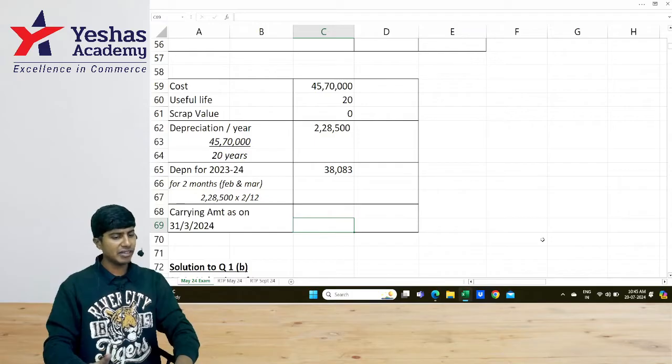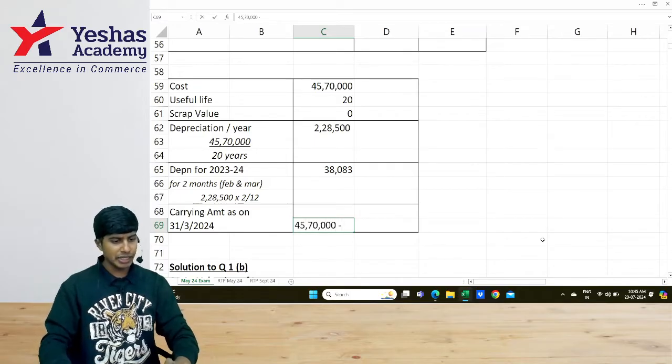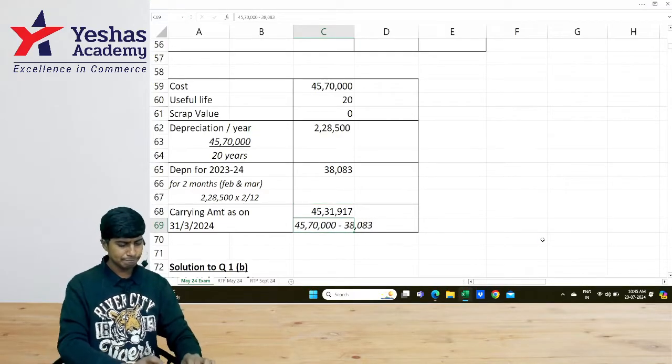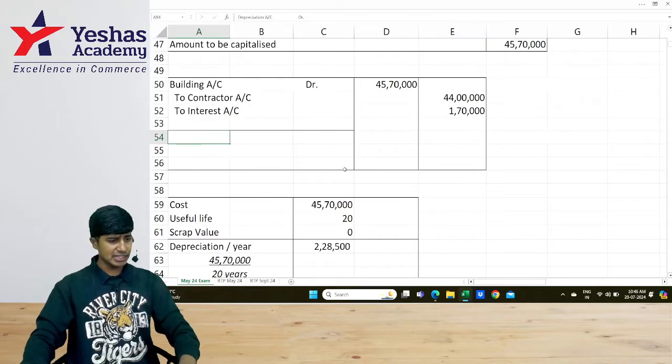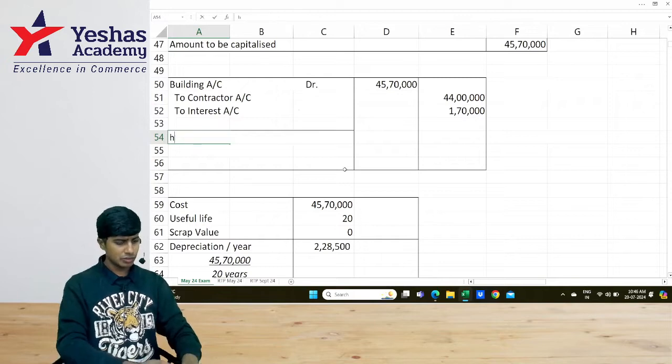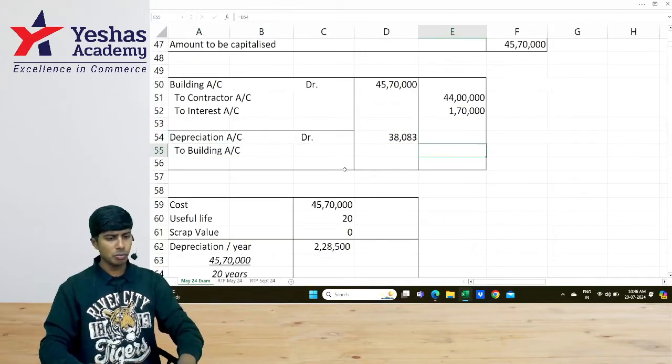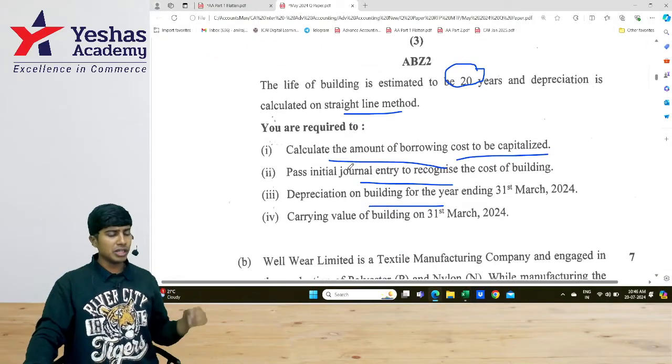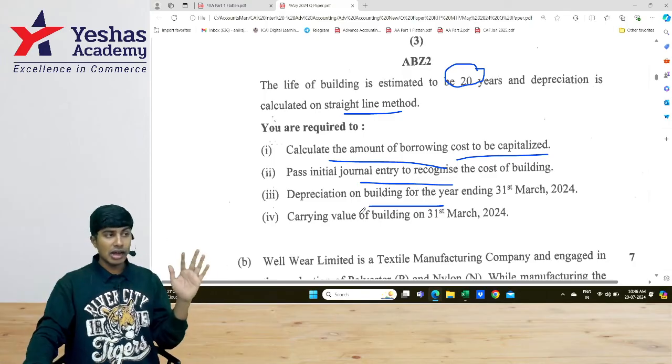And carrying amount of the asset will be ₹45,70,000 minus ₹38,083, ₹45,31,900. This is what is being asked. We will pass journal entry also for this. I would write the entry as depreciation account debit ₹38,083 to building account ₹38,083. This is my journal entry. And I am done with all the sub-questions that's been asked. Computing the borrowing cost to be capitalized, identifying, passing the initial journal entry, identifying the depreciation as well as the carrying amount of the building. And all this for 7 marks.